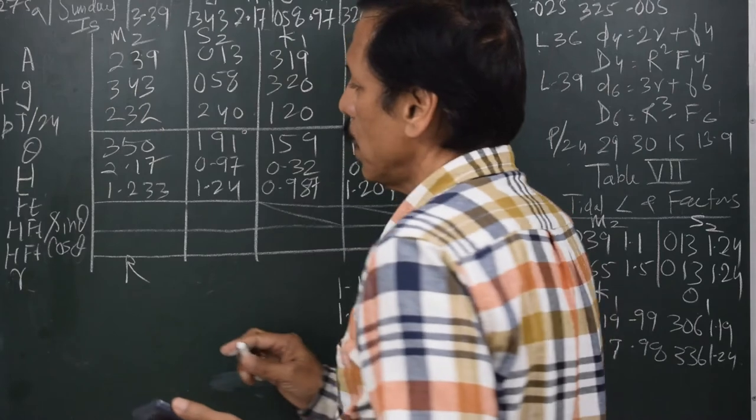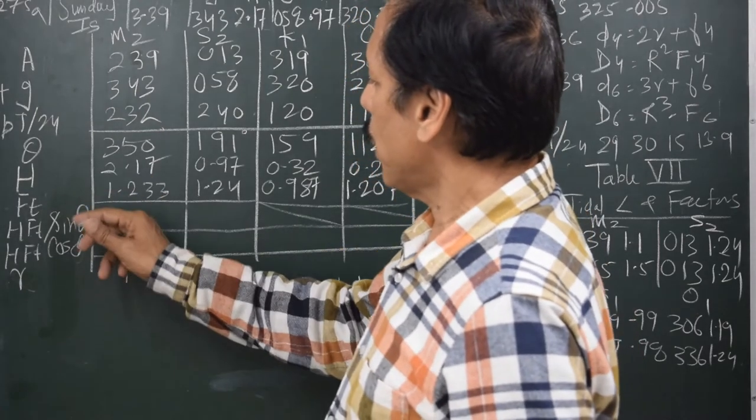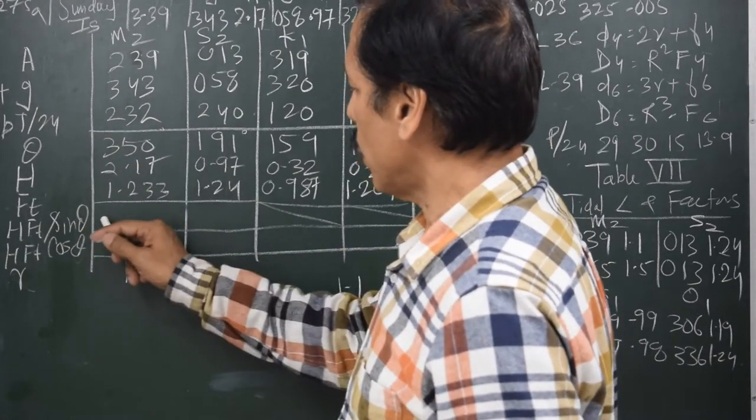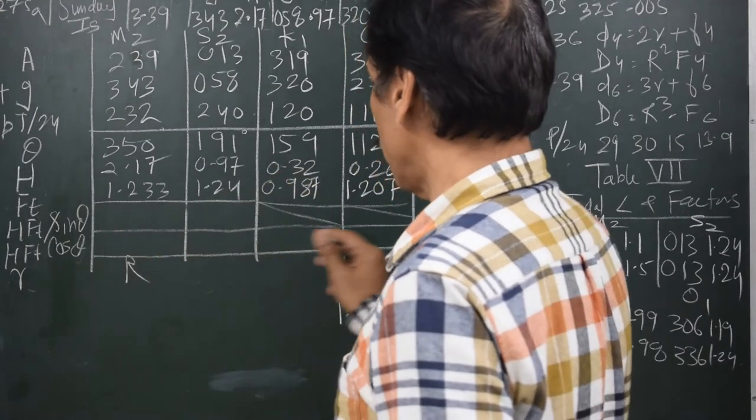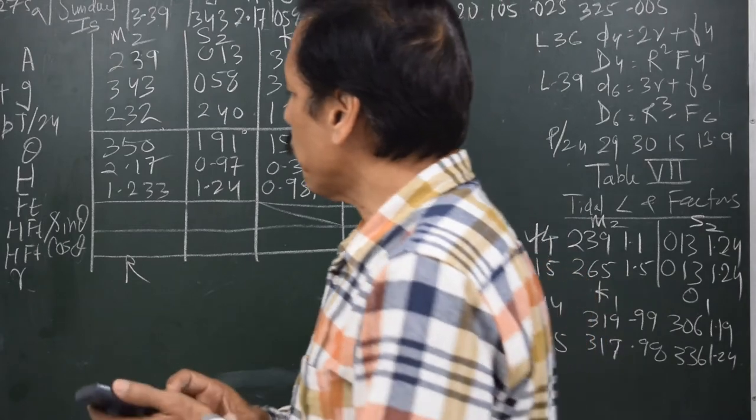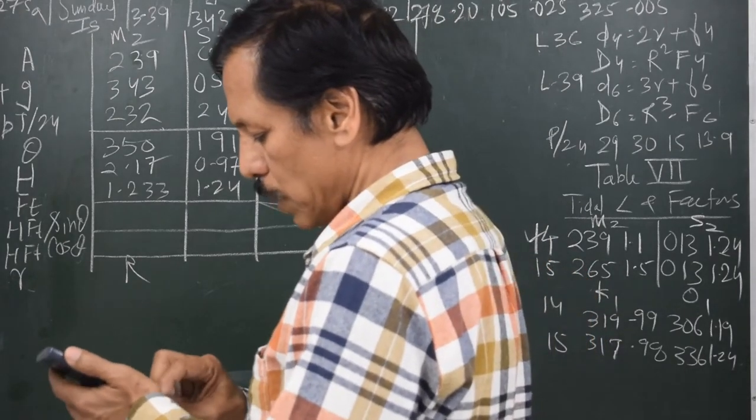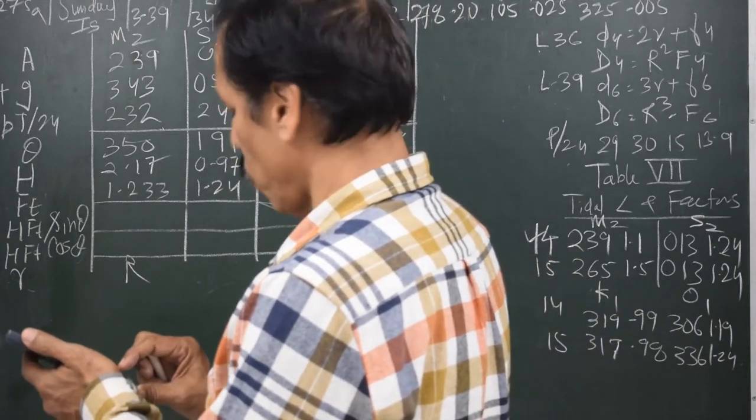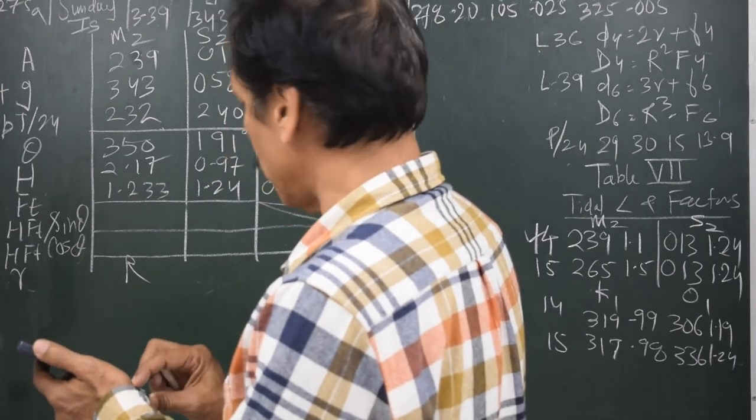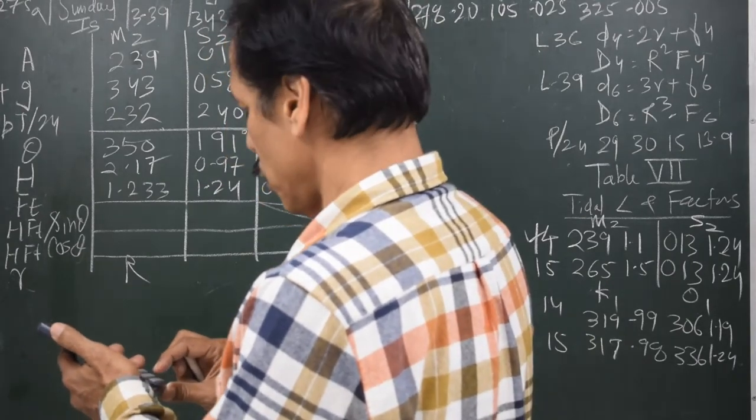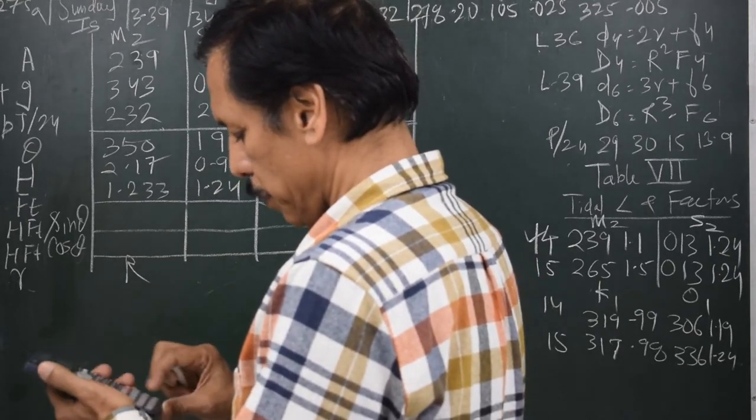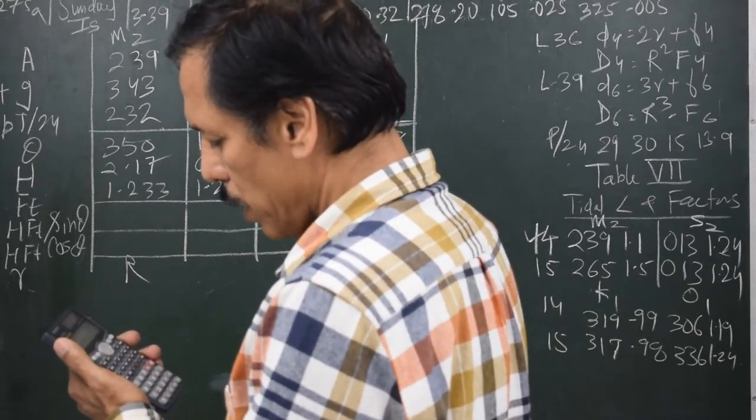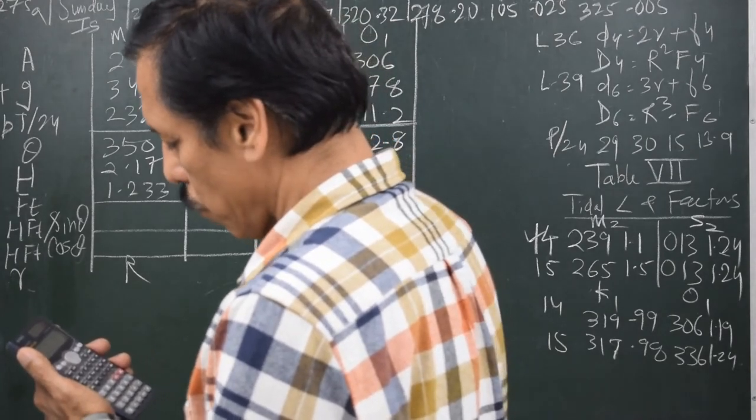Now what I have to do is, I have to pick up these values H, F_t and theta and find out H F_t sin theta here and here, H F_t cos theta in all the 4 columns. So let's start: 2.17 into 1.233 multiplied by sin 350.